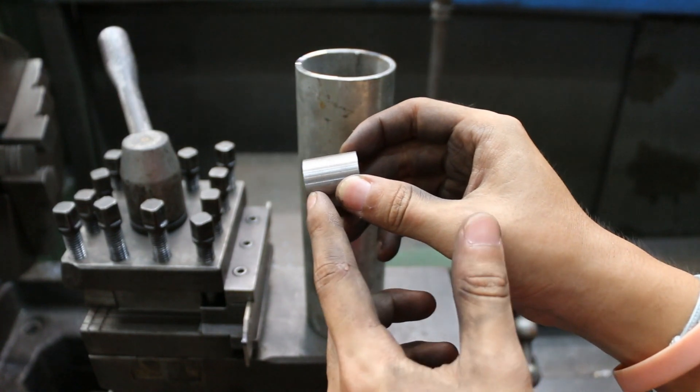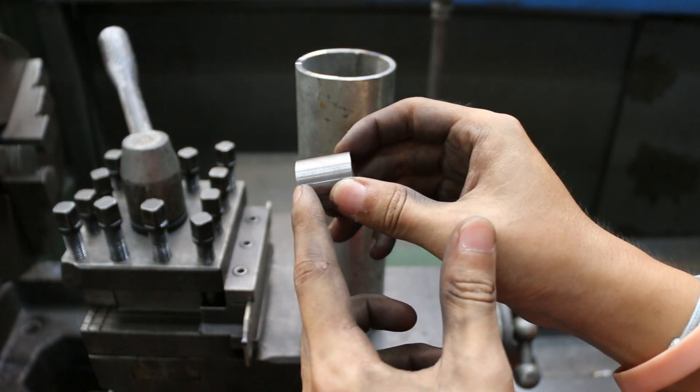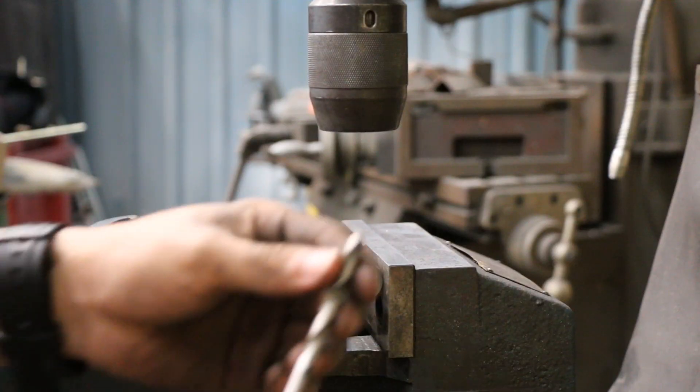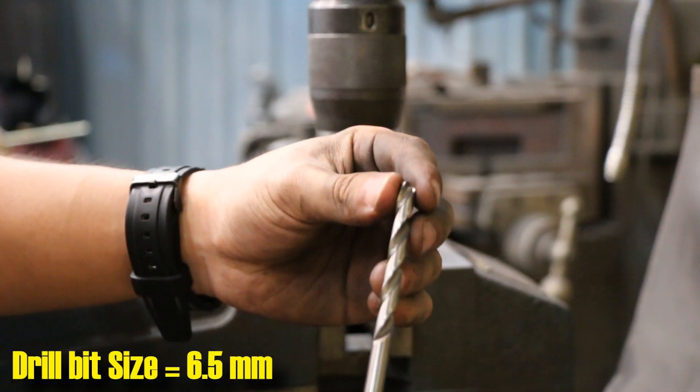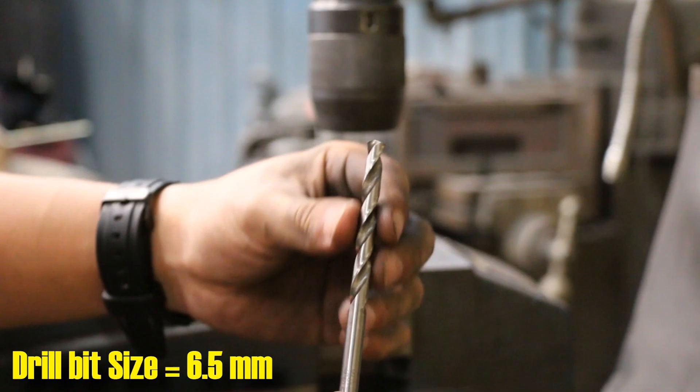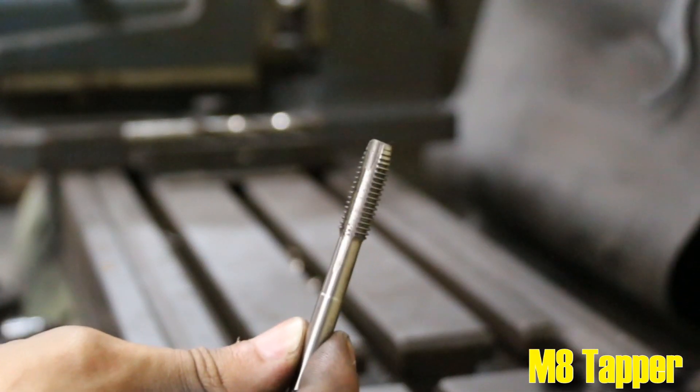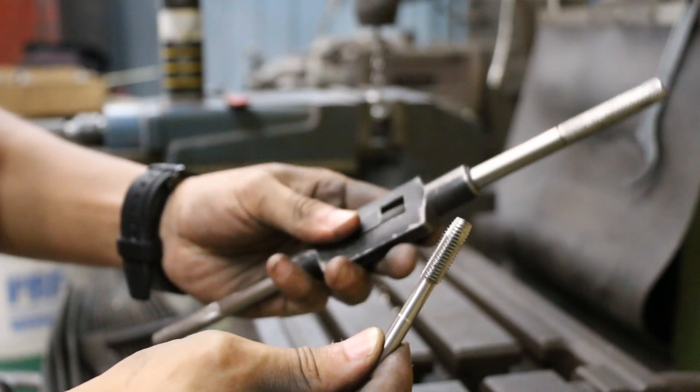So a hole is going to be drilled at the collar and also thread tapping in order to hold the gas nozzle. I have picked a 6.5mm drill bit and also an M8 tapper to tap the hole with the aid of thermatic cutting fluid.